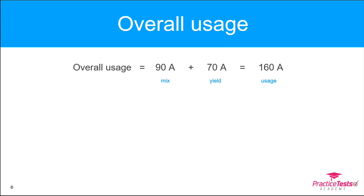If we take the mix and yield variances and add them together, that comes to our overall usage variance: $90 + $70 = $160 adverse. You can apply this to labor as well — if you use different grades of labor instead of different types of material, you run very similar calculations. That's mix and yield covered.